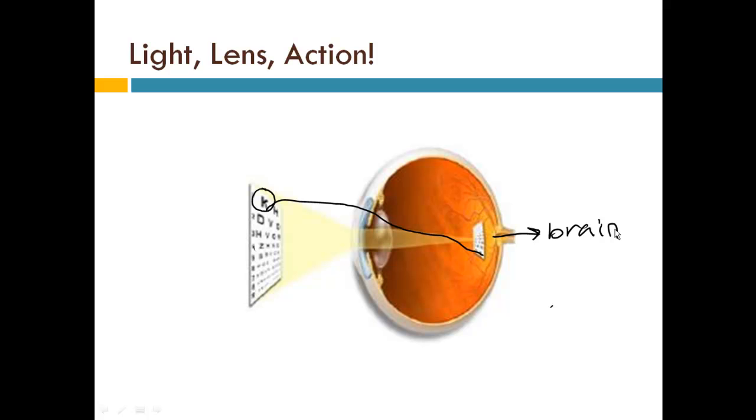And in a study done with adults, it was found that if you put some goggles on or glasses on them that flip the image, after a couple of days, their brain actually does adjust to that change.